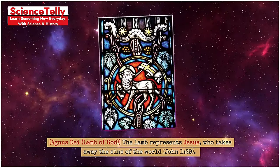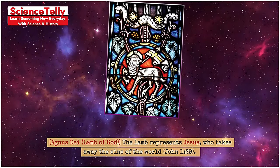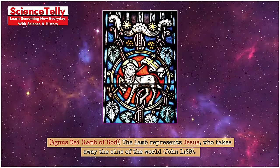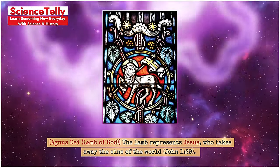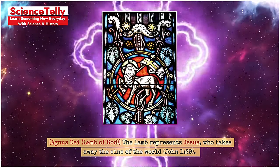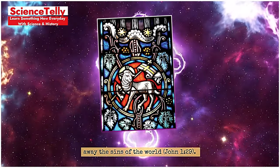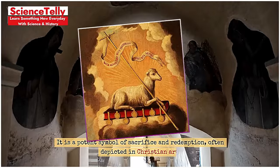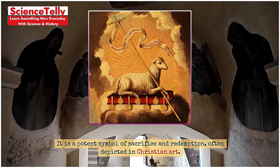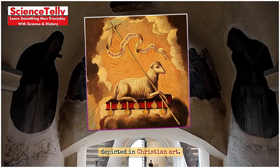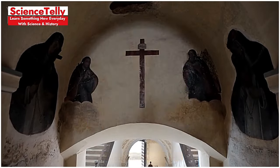Agnus Dei — Lamb of God. The Lamb represents Jesus, who takes away the sins of the world (John chapter 1 verse 29). It is a potent symbol of sacrifice and redemption, often depicted in Christian art.